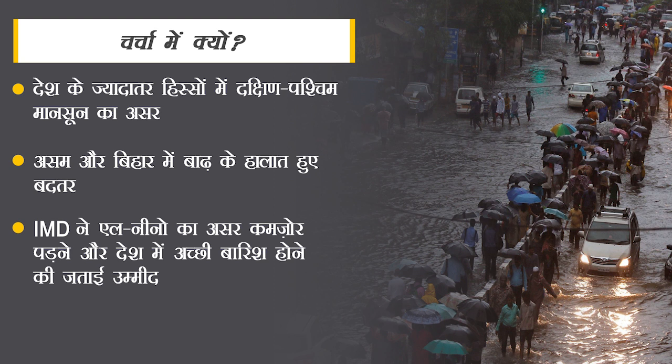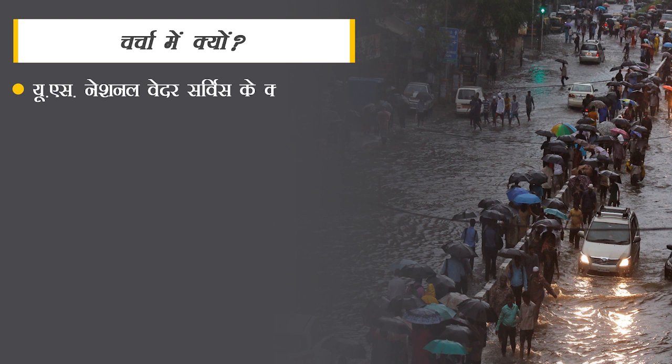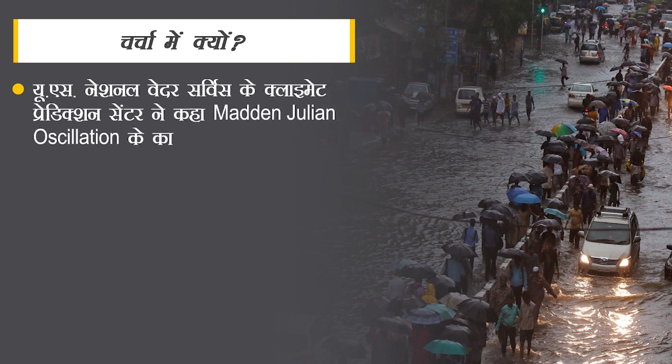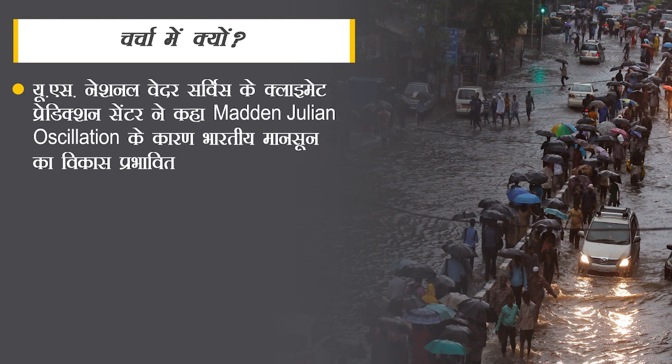भारतीय मौसम विभाग ने El Niño का असर कमजोर पड़ने और देश में अच्छी बारिश होने की उम्मीद जताई है। जबकि US National Weather Service के Climate Prediction Center के मुताबिक Madden-Julian Oscillation की स्थिति और तीव्रता के कारण भारतीय मानसून का विकास प्रभावित हुआ है, जिससे मानसून के आगमन और विस्तार में देरी हो रही है। इन खबरों के बीच आज हम मानसून और उसकी क्रियाविधि पर चर्चा करेंगे।